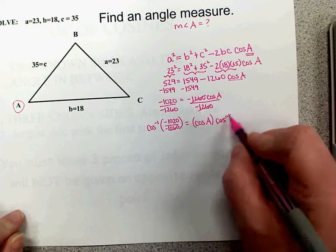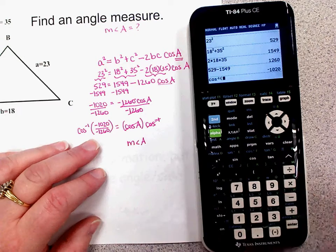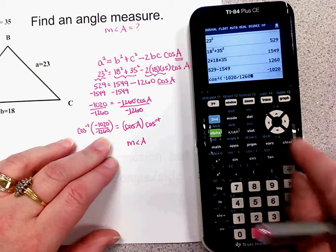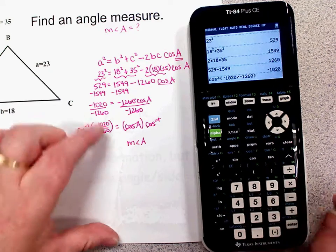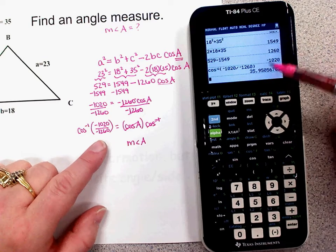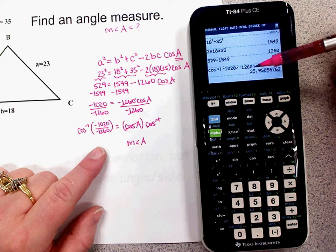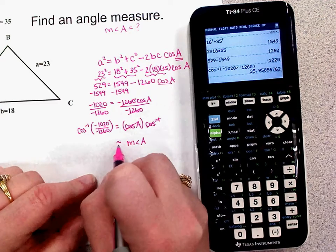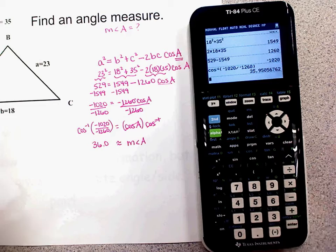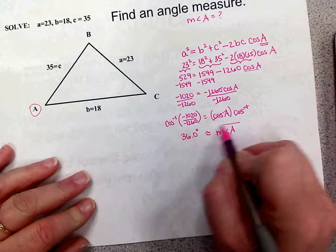In the calculator, press second-cosine for inverse cosine, then enter negative 1,020 divided by negative 1,260. The negatives divide to give a positive. Rounding to the nearest tenth, the nine in the decimal rounds up, pushing the value to 36.0. Remember to write 36.0 degrees — not just 36 — since we're rounding to the nearest tenth. The measure of angle A is approximately 36.0 degrees.